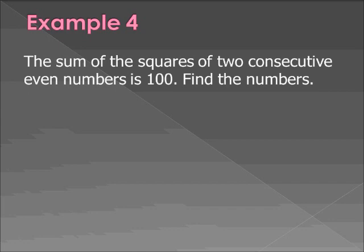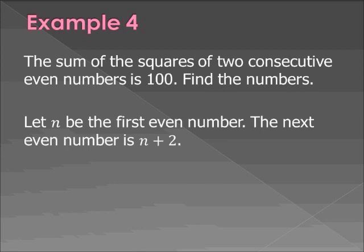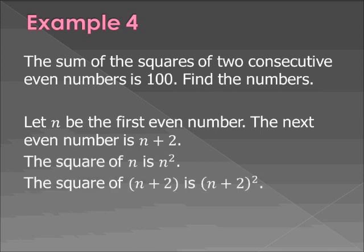Example 4. The sum of the squares of two consecutive even numbers is 100. Find the numbers. All right. So let's call n the first even number. Let's call the next even number n plus 2. So we know that the square of n is n squared. The square of n plus 2 is n plus 2 quantity squared. And we're looking to see that the sum of those squares is 100. So you just add them together. n squared plus n plus 2 quantity squared equals 100. And you're going to solve for n.